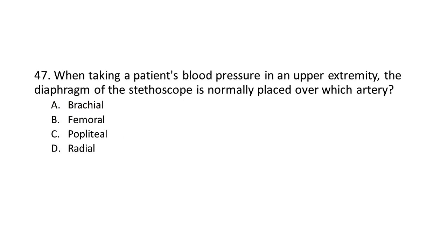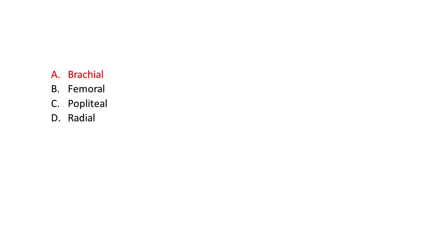Question 47. When taking a patient's blood pressure in an upper extremity, the diaphragm of the stethoscope is normally placed over which artery? A) Brachial, B) Femoral, C) Popliteal, or D) Radial. The answer is A: Brachial.